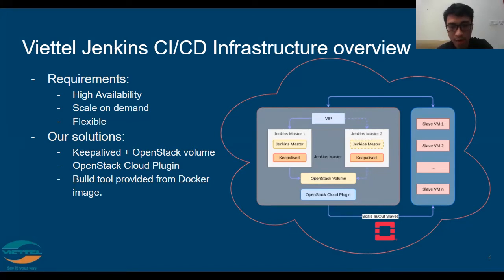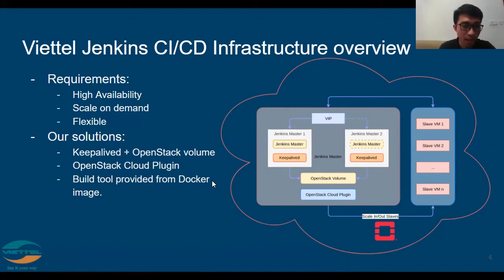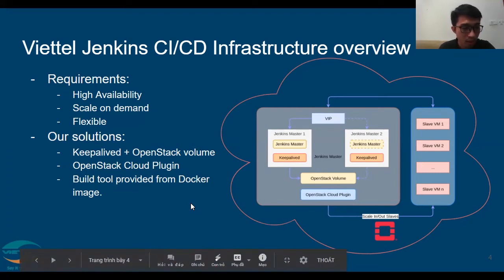Or they can find a solution that scales automatically, such as provisioning a server, joining a cluster, and removing it on low demand. So to take advantage of OpenStack Cloud, we chose the OpenStack Cloud plugin for Jenkins to interact with the cloud and automatically do everything I just described.